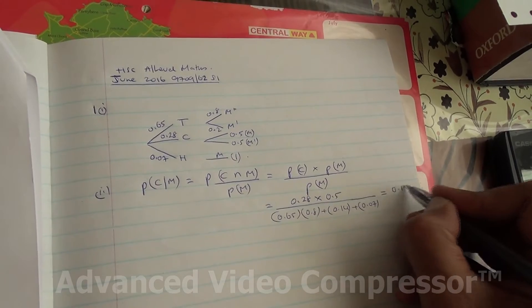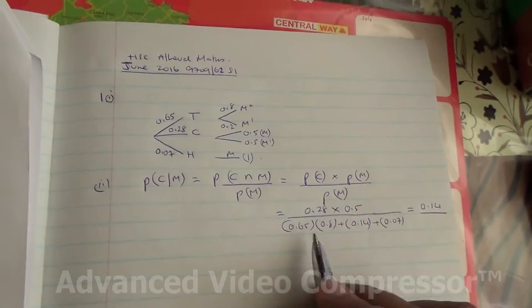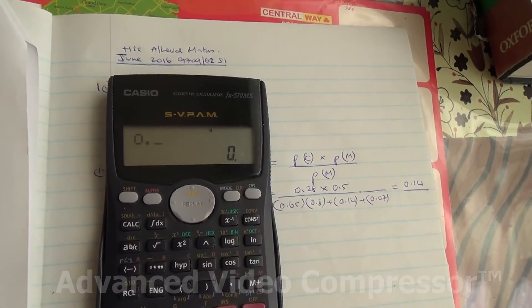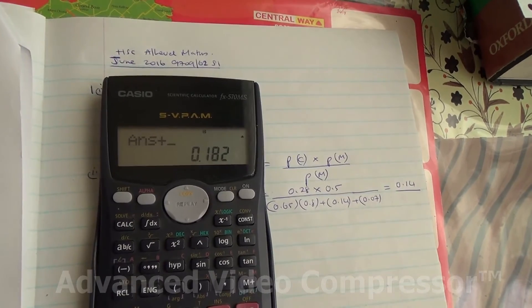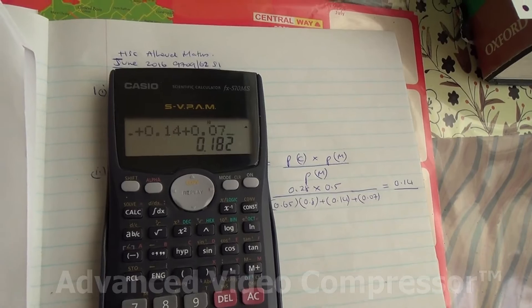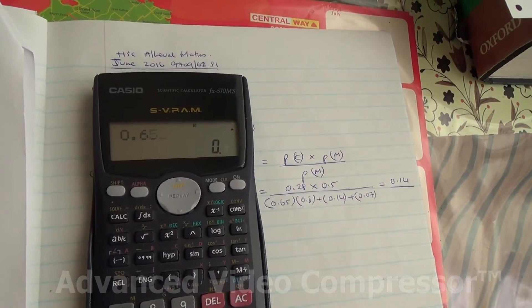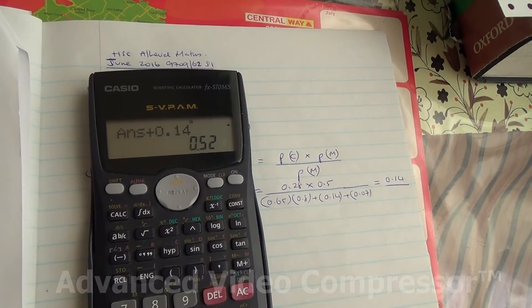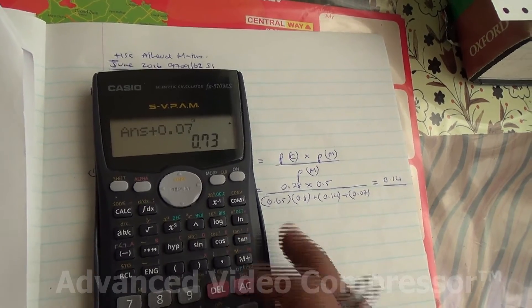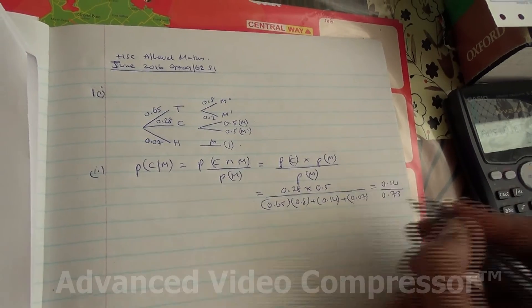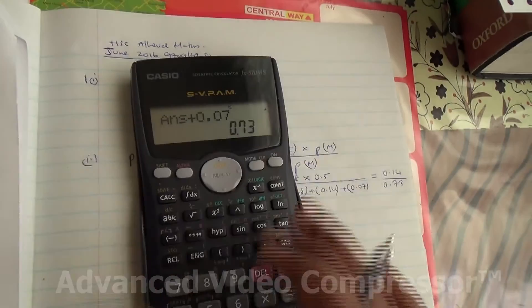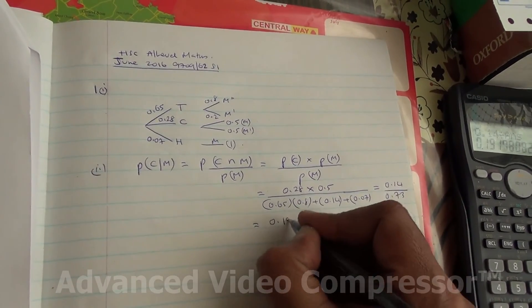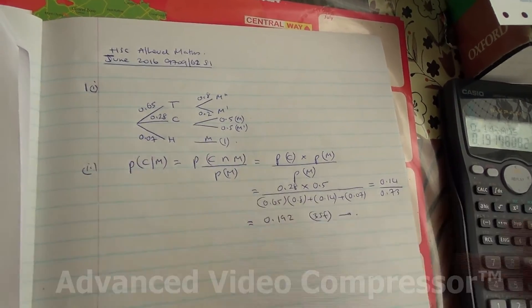This times that is going to be 0.14, divided by all of that. It's going to be 0.192 to 3 significant figures. First question done.